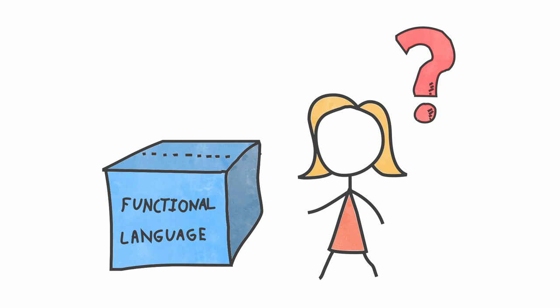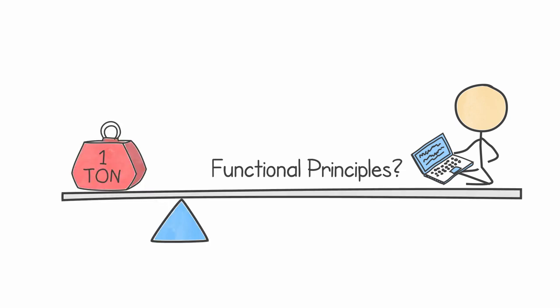The reason why it's confusing is because we are asking ourselves the wrong question. It's not the language that we need to worry about, but our way of programming. After all, it's the code that we write that becomes functional, not the programming language. A better question to ask would be: what are the functional principles that we should follow when writing code? A functional language is simply a language that gives you the most tools and help to follow these principles.